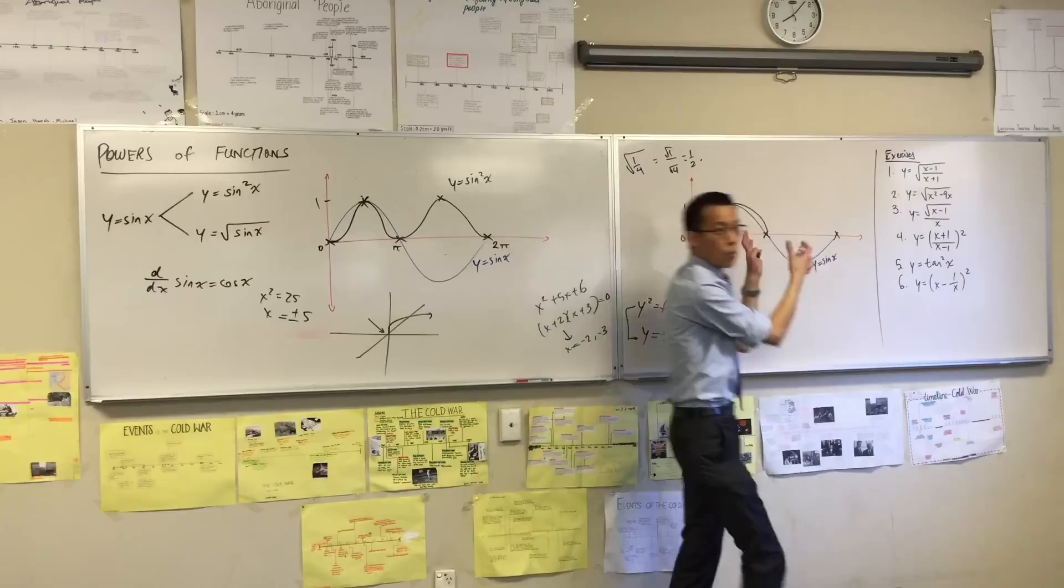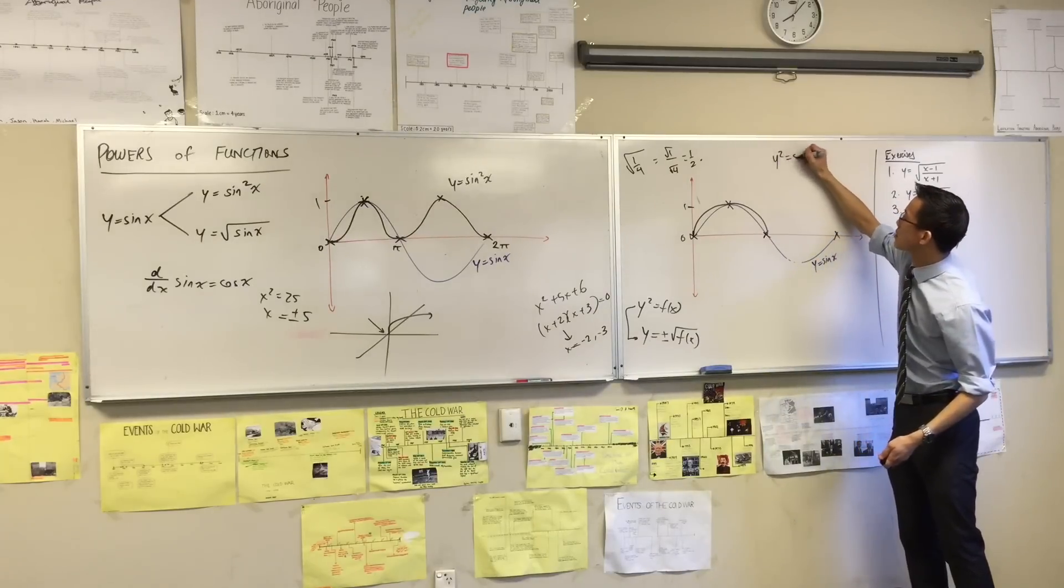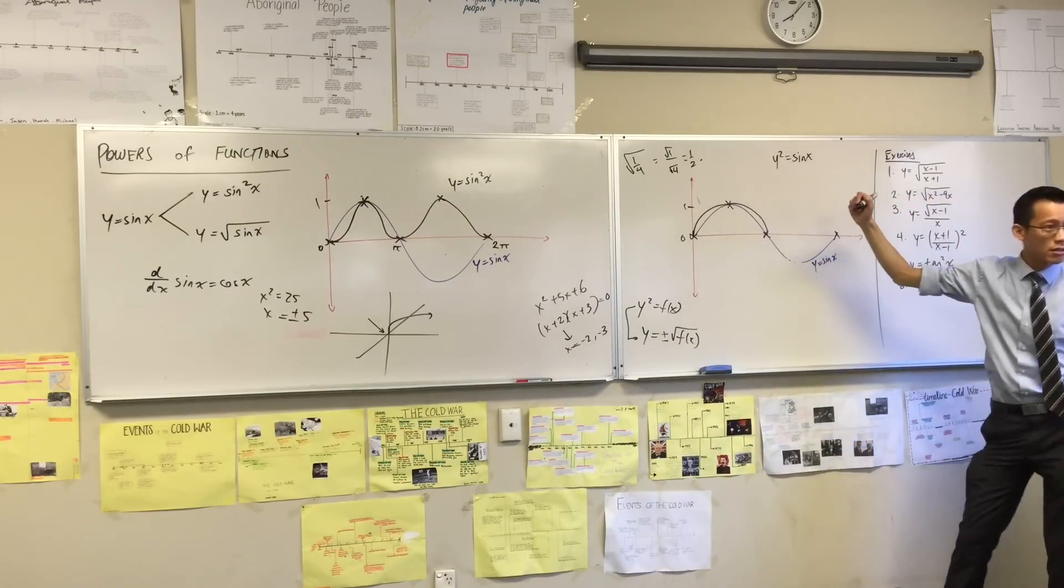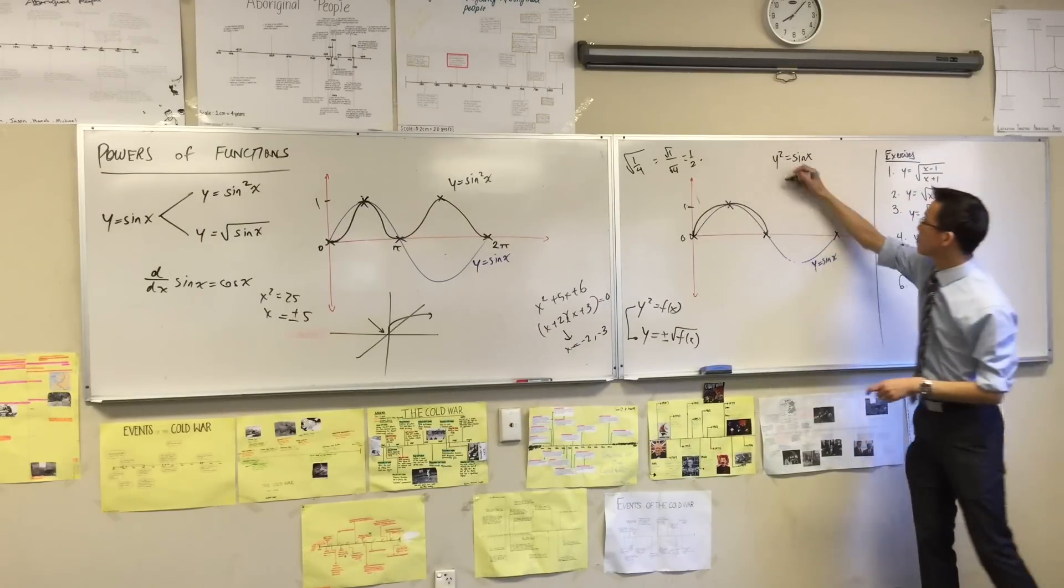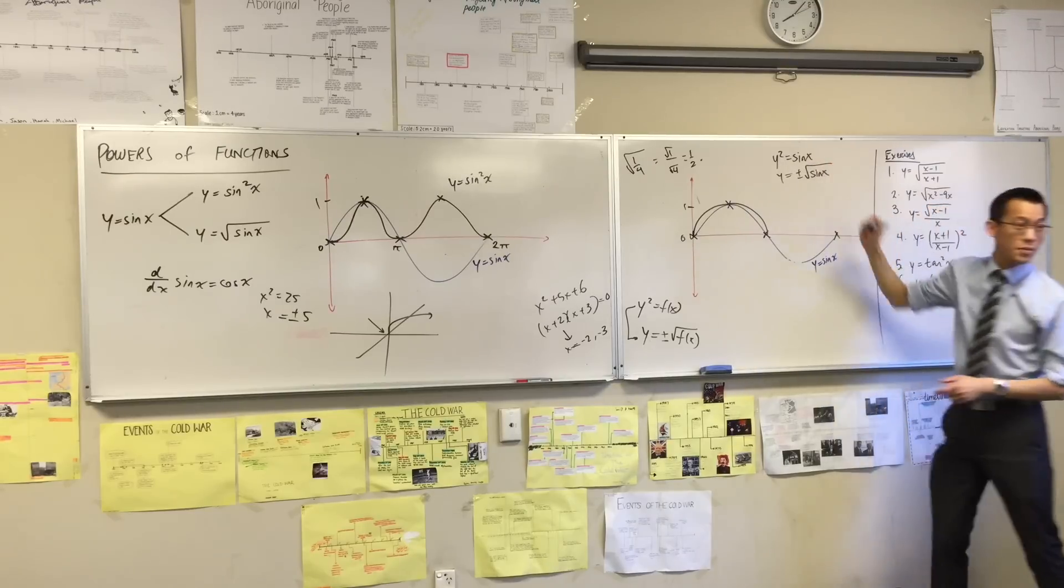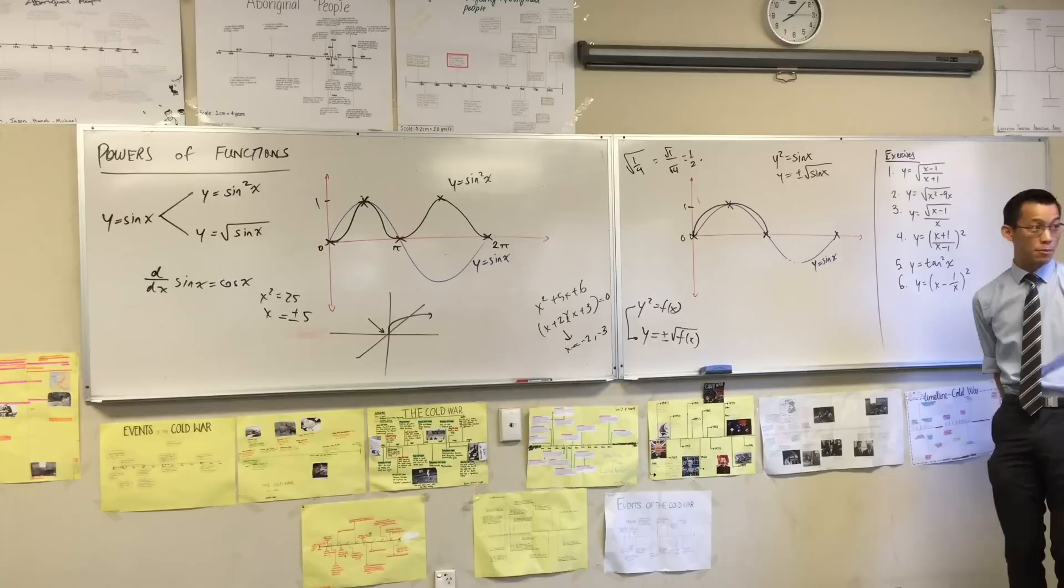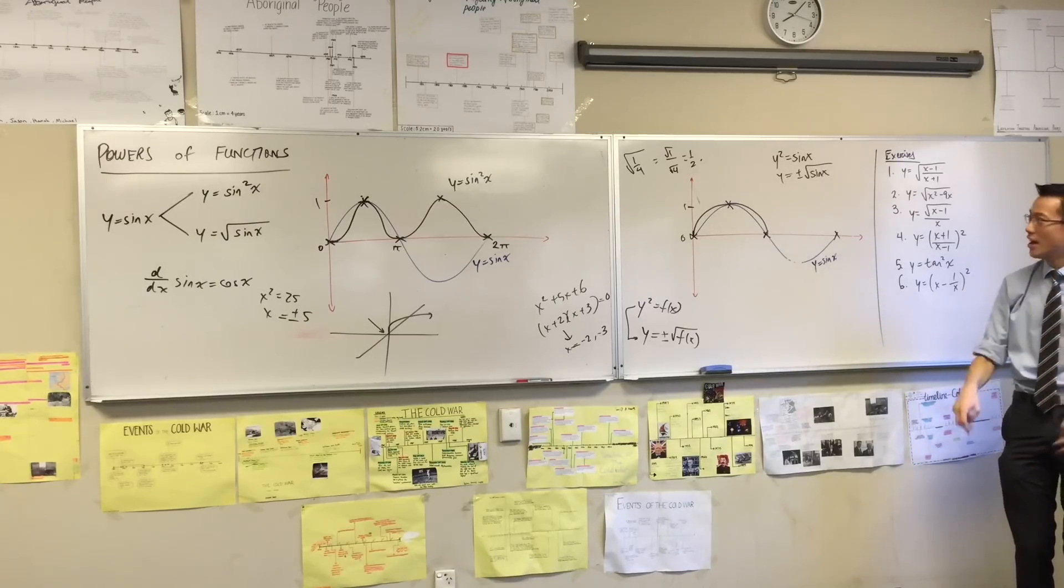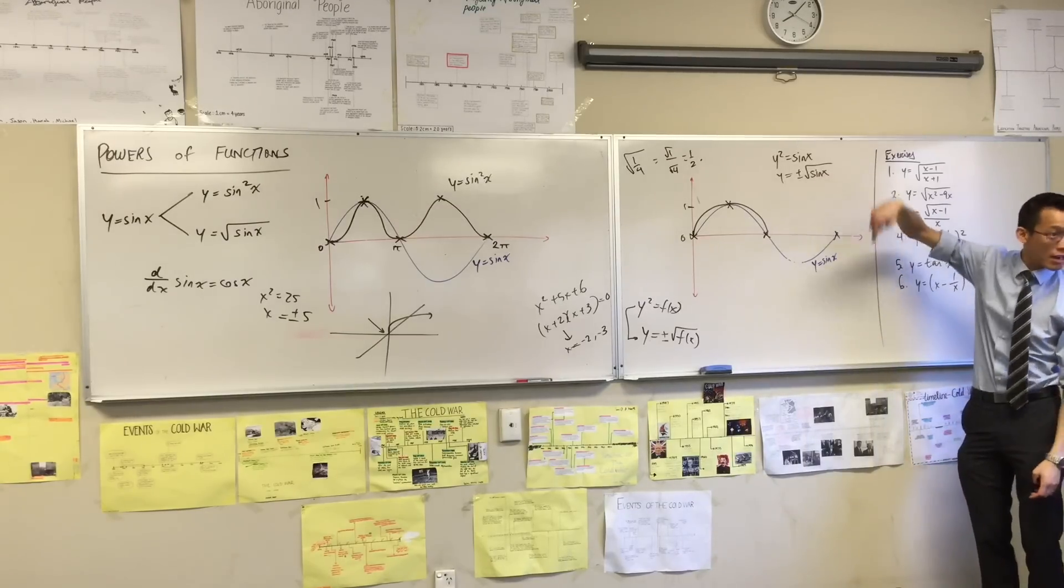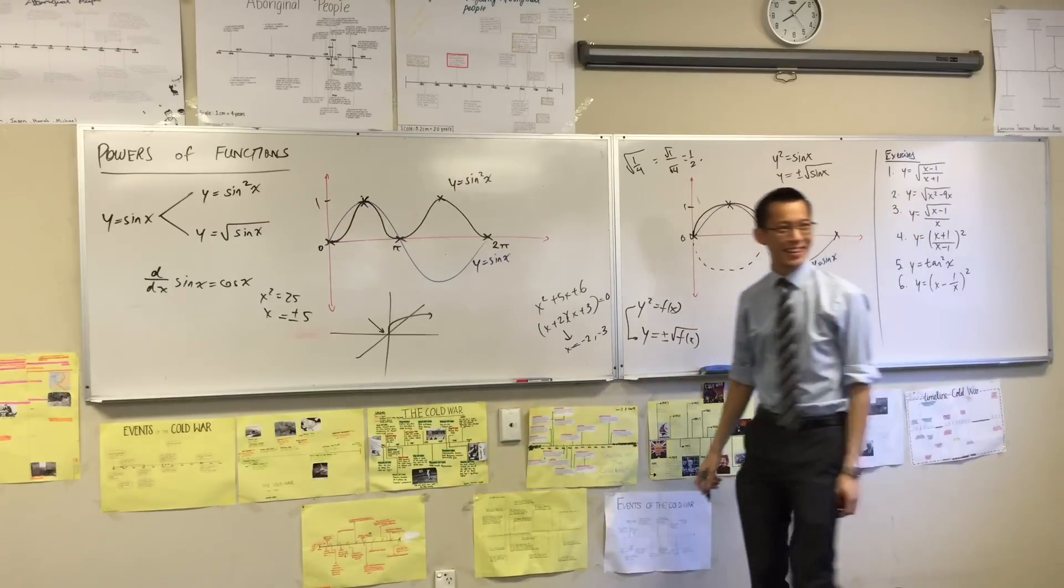If instead I ask you to draw this, okay? Then I can take the square root of both sides, which gives me this. So what am I going to add? Think back to the first lesson we did on graphing, which means I've got the other side as well, which is down here.